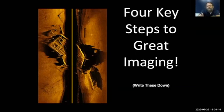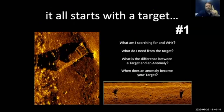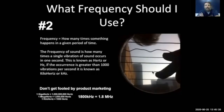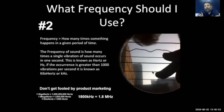Now that we've talked about the different types of sonar, let's talk about how to get good imaging. The first step is identifying your target. Point number two is what frequency should you use. Some systems out there will only have a single frequency, but professional grade systems will have at least two frequencies — a lower frequency for your search and a higher frequency for identification of the object.